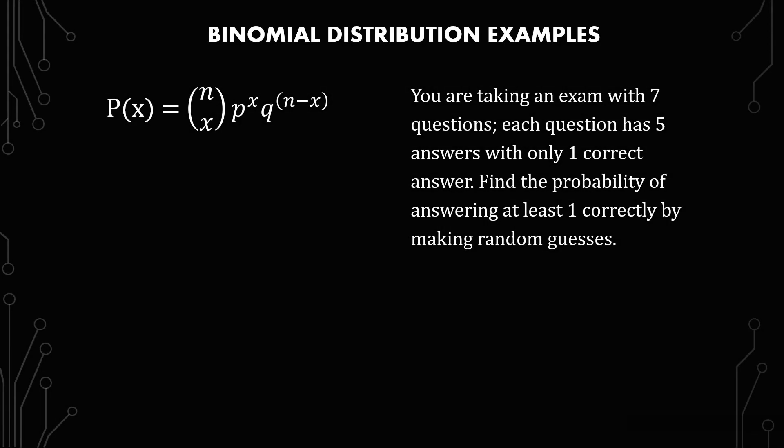The third example is the first example just said in a different way. Everything is basically the same except the final find. And so let's just walk through this really fast. You are taking an exam with seven questions. So that's the same. Each question has five answers with only one correct answer. That's the same. Find the probability of answering at least one correctly by making random guesses.